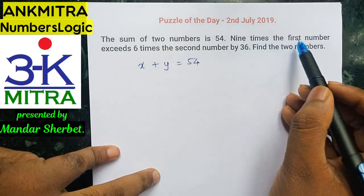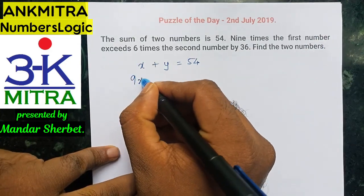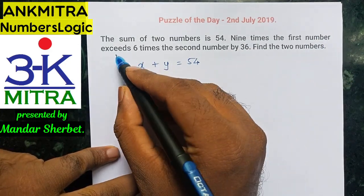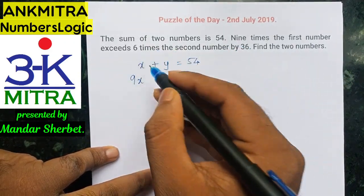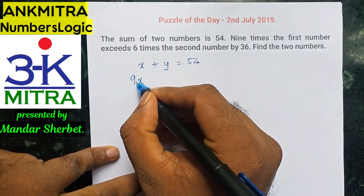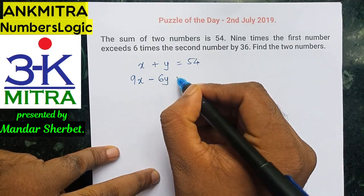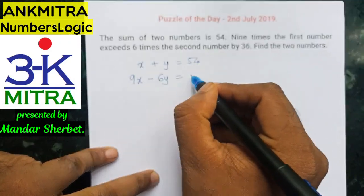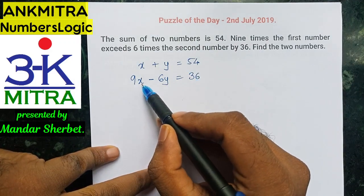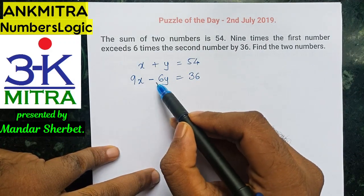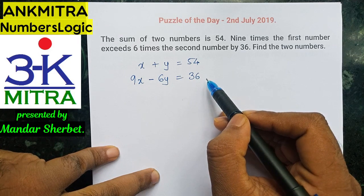The second information we have is nine times the first number, that is 9x, exceeds six times the second number. Exceeds means the difference between 9x and 6y is 36, so 9x minus 6y equals 36.